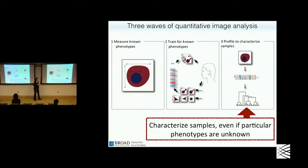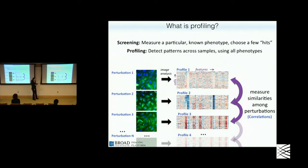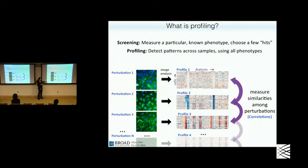If you're familiar with the connectivity map, this will be easier to understand. What is profiling as a general thing? What I've described up until now is screening or scoring a particular assay — the biologist knows exactly what phenotype they want. By contrast, profiling is where we're detecting patterns across a set of samples, using all the phenotypes we can. Imaging is great for this because it's so multiplex — multiple stains and multiple features per stain — so for a number of different perturbations you get a beautiful matrix of data and can measure similarities or correlations among all the different patterns.